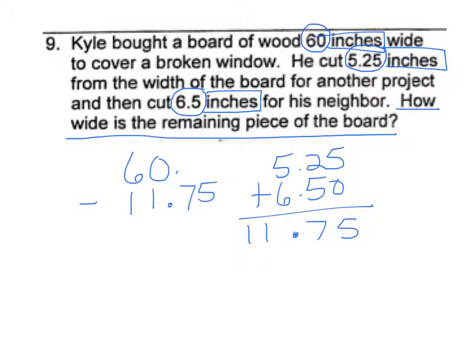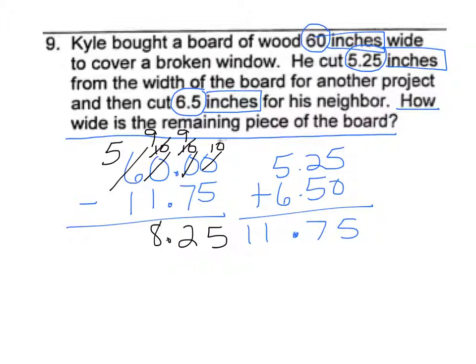Remember, you always have to line up your decimals. And this will become a 5 and this will become a 10. But then we'll borrow 1 from that, so it becomes a 9 and this becomes a 10. Then we borrow 1 from that, that becomes a 9, this becomes a 10. 10 minus 5 is 5, 9 minus 7 is 2, 9 minus 1 is 8, and 5 minus 1 is 4. So he's left with 48.25 inches.